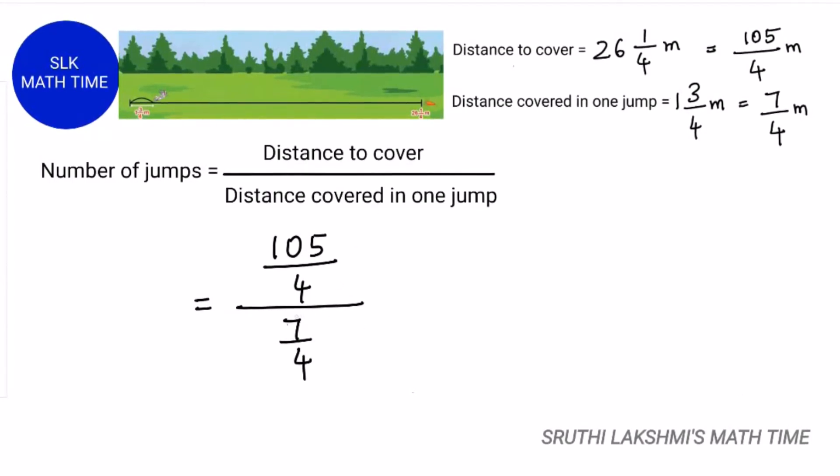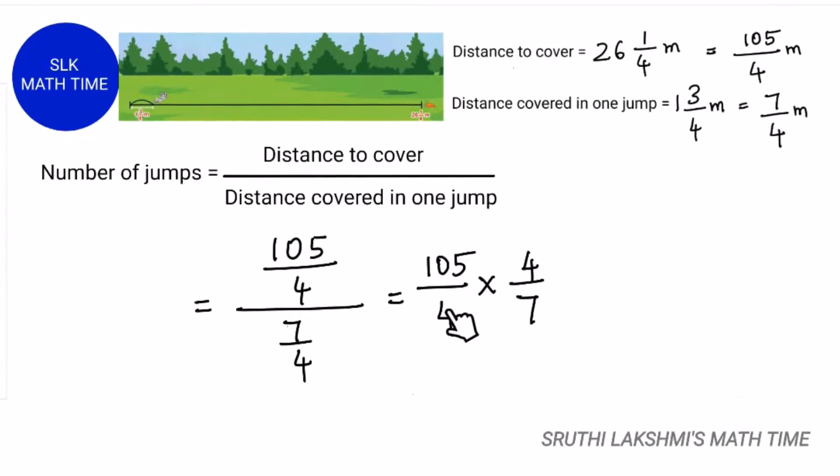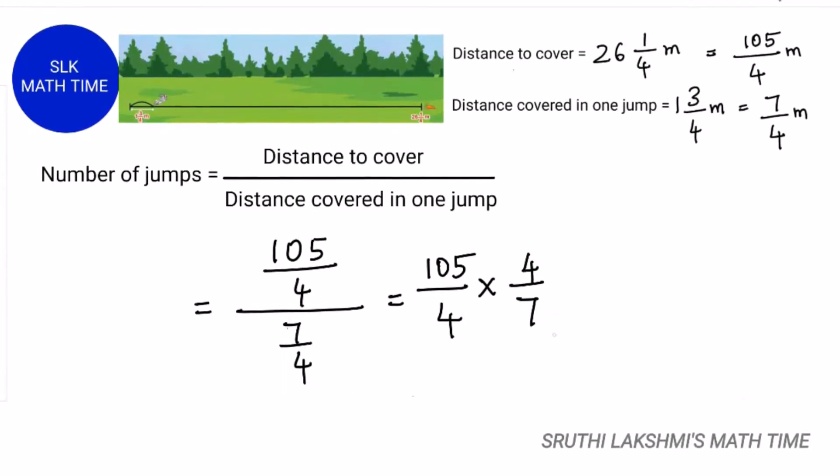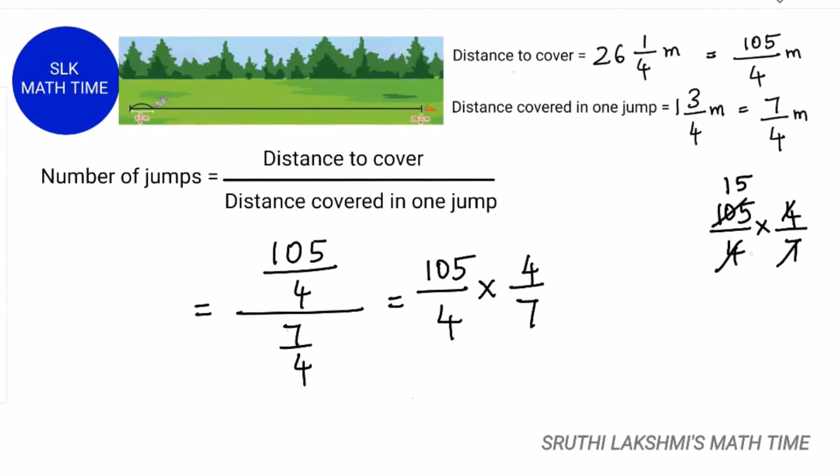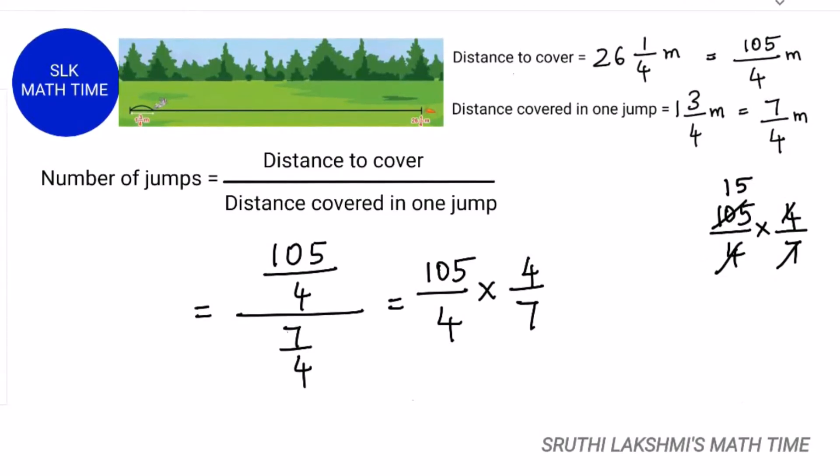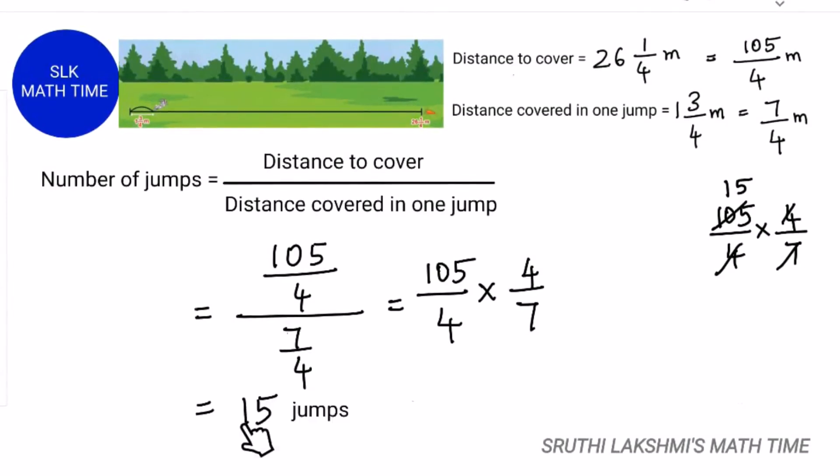So this division sign changes into a multiplication sign, and the 7 by 4 turns into a reciprocal which is 4 by 7. So it's 105 by 4 into 4 by 7. So we cross out 4 and 4, and 15 times 7 is 105, 1 times 7 is 7. So the answer is 15. So the rabbit takes 15 jumps to fetch its food.